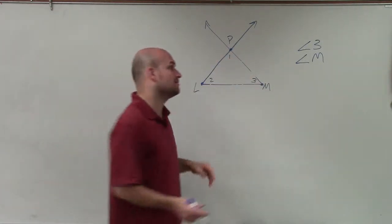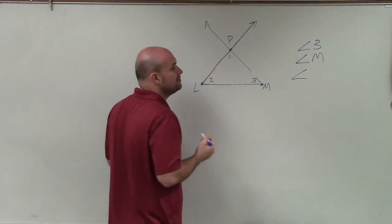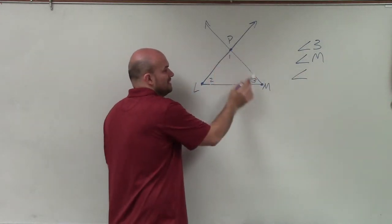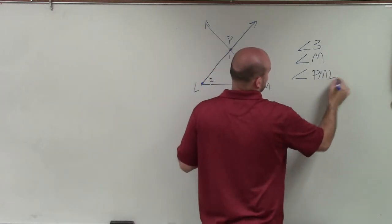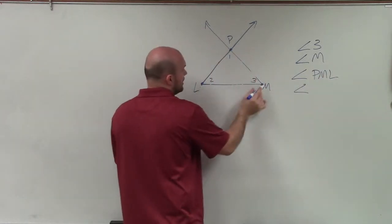And then the third way that we're going to label our angles is by using the three points that can label them. So it could be P, M, L, or angle L, M, P.